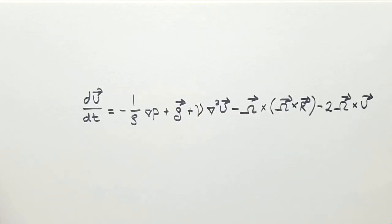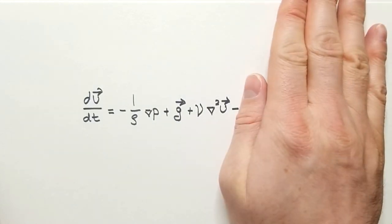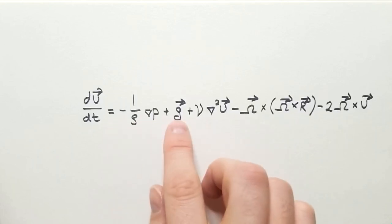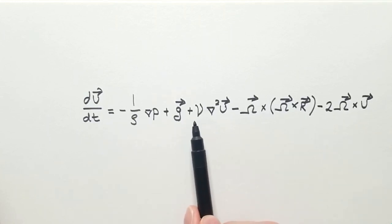This is Navier-Stokes equation in vector form in non-inertial frame of reference. In an inertial frame of reference, the two apparent forces disappear, and we end up only with these three terms on the right side. If we also neglect viscosity, then the pressure gradient force and gravity, together with acceleration, that's called Euler equation. So Euler equation is the special case of Navier-Stokes equation when there is no viscosity and there are no apparent forces.